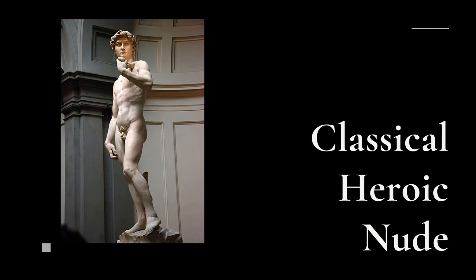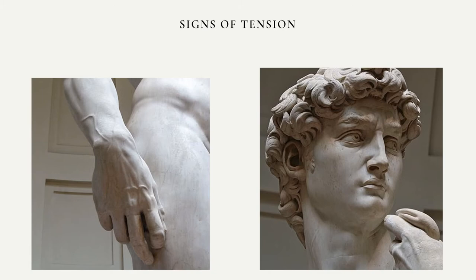Michelangelo sculpted his David in the classical, heroic nude style of ancient Greece. His hips are shifted slightly, a pose called contrapposto. David stands stoically and stares off into the distance, contemplating his task at hand. The viewers are given clues to his story — his left hand has the sling over his shoulder, while his right hand clutches the stone. Masterfully, Michelangelo was able to convey the tension in David's pose. His eyes are slightly squinted, as if he is sizing up his opponent. The muscles in his neck and shoulders are tensed up — it could be conveying nerves, but it could also be David's adrenaline preparing him for the fight ahead.